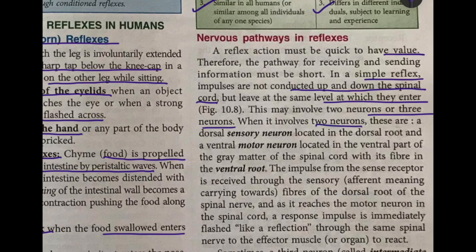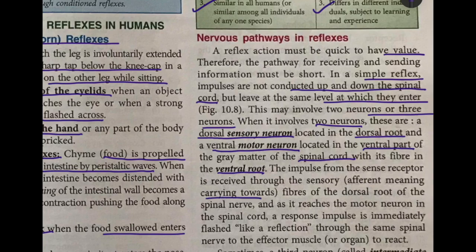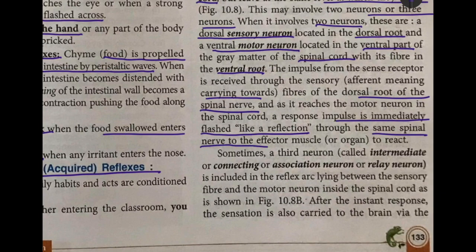When it involves two neurons, there is a dorsal sensory neuron located in the dorsal root of the spinal cord and a ventral motor neuron located at the ventral part of the gray matter. The motor neuron has its fiber in the ventral root. The impulse from the sense receptors is received through the sensory, afferent pathway of the dorsal root of the spinal nerve, and as it reaches the motor neuron a response impulse is immediately flashed back — reflected back — through the same spinal nerve to the effector muscle or organ.